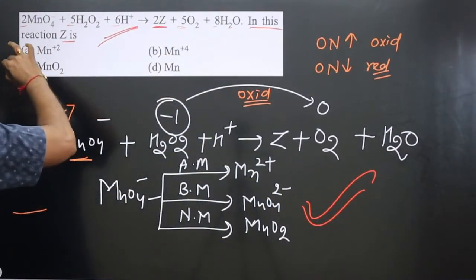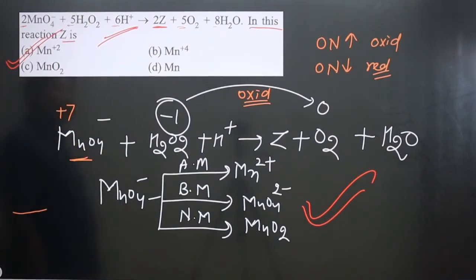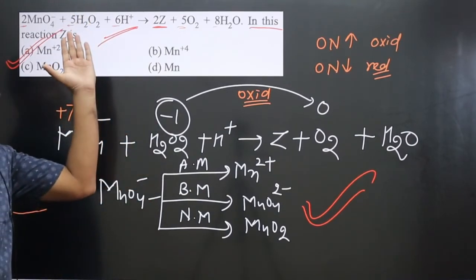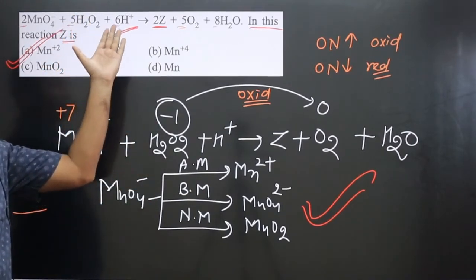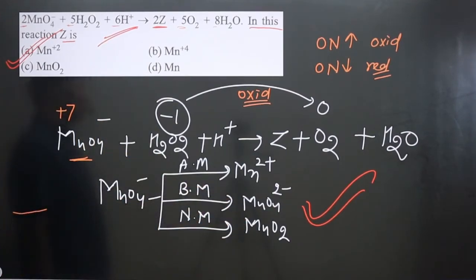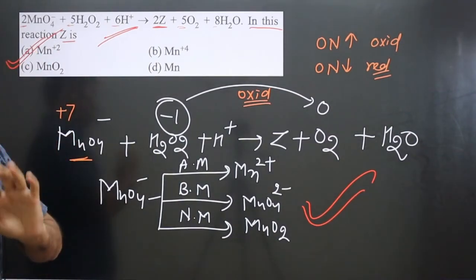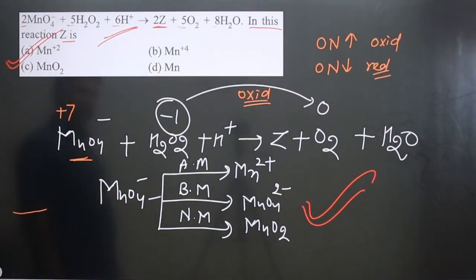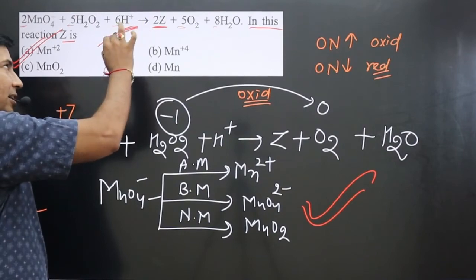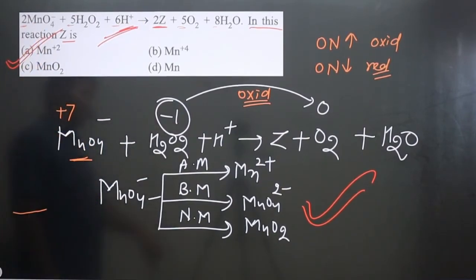So we get Z = Mn²⁺. If it were basic medium, we would go for MnO₄²⁻. But since H⁺ ion confirms acidic medium, Z is Mn²⁺. We answered this question simply by identifying that H⁺ ion means the reaction is taking place in acidic medium. Thank you.